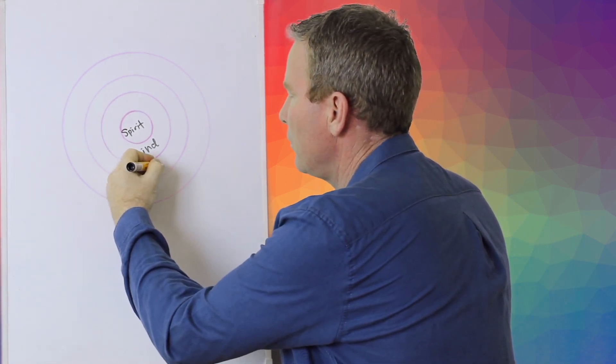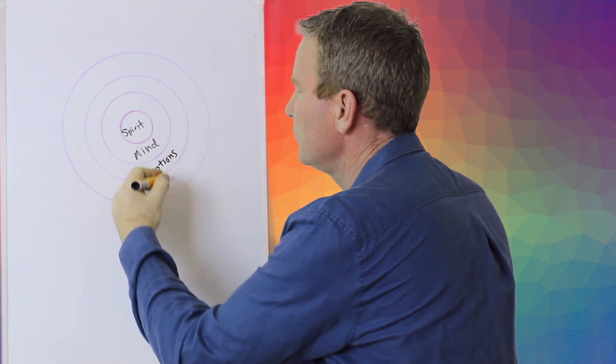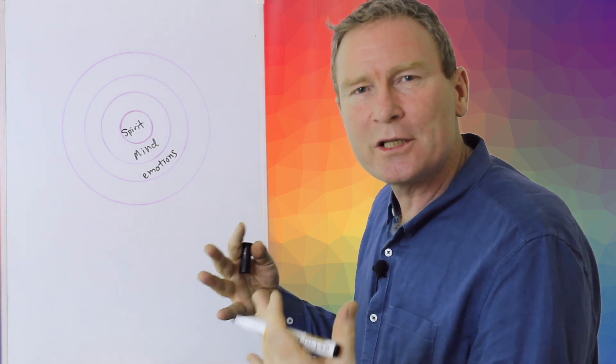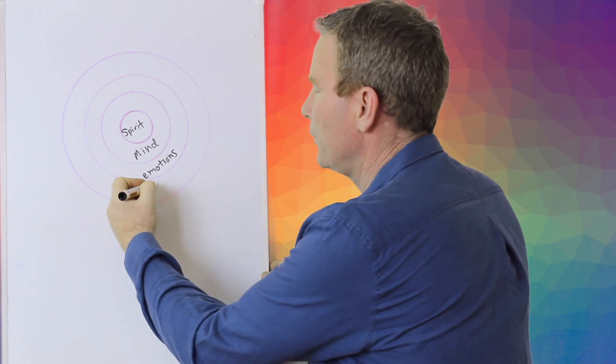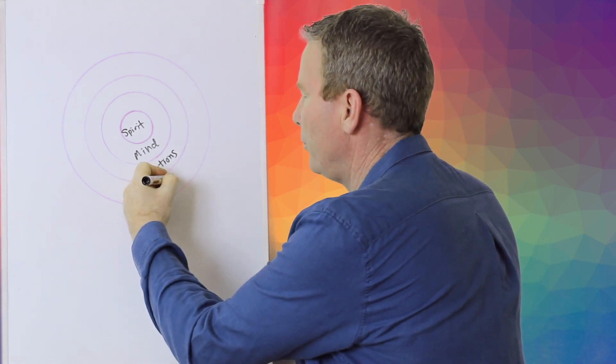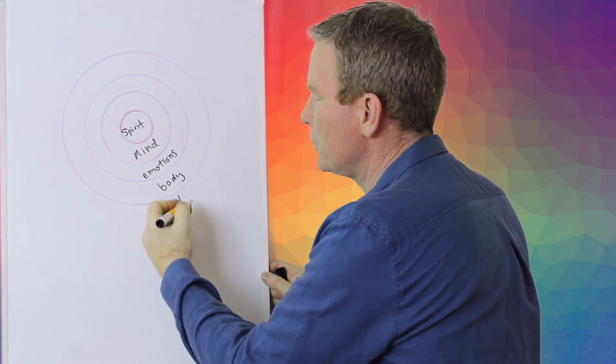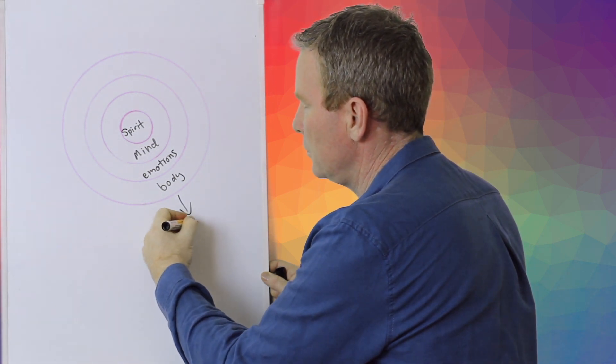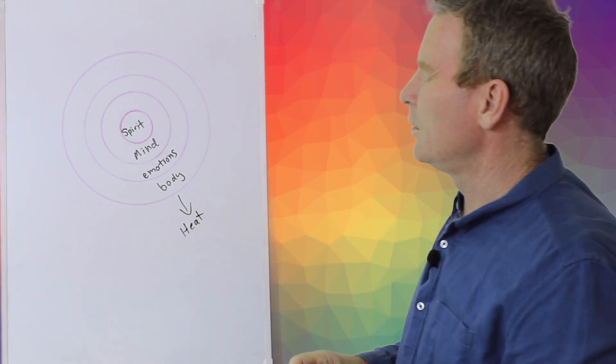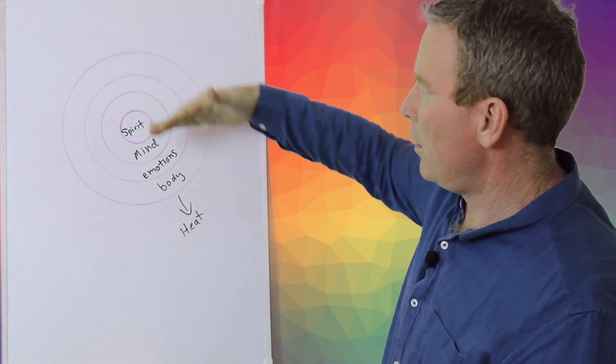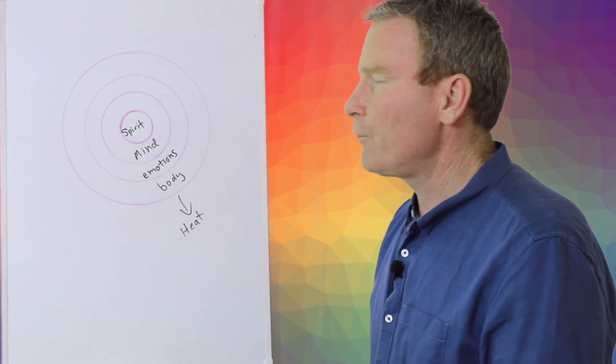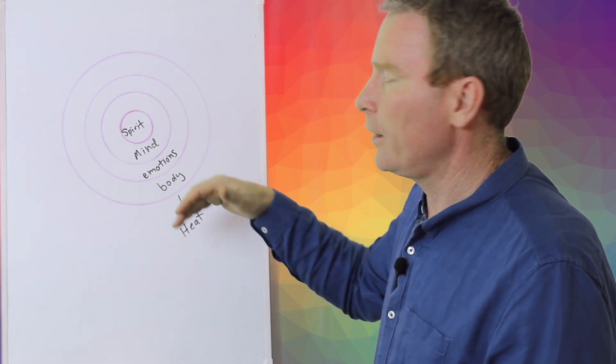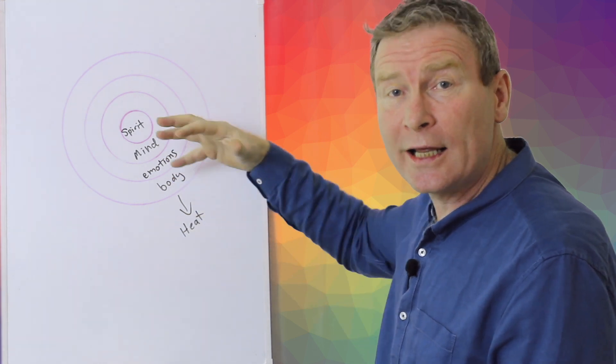Then it encounters our emotions. So on its way down or on its way out, which is essentially the same thing, the energy needs to travel through these levels. And lastly, our body. And of course, the final end result of all of this is heat. You'll see, this is the flow of energy.